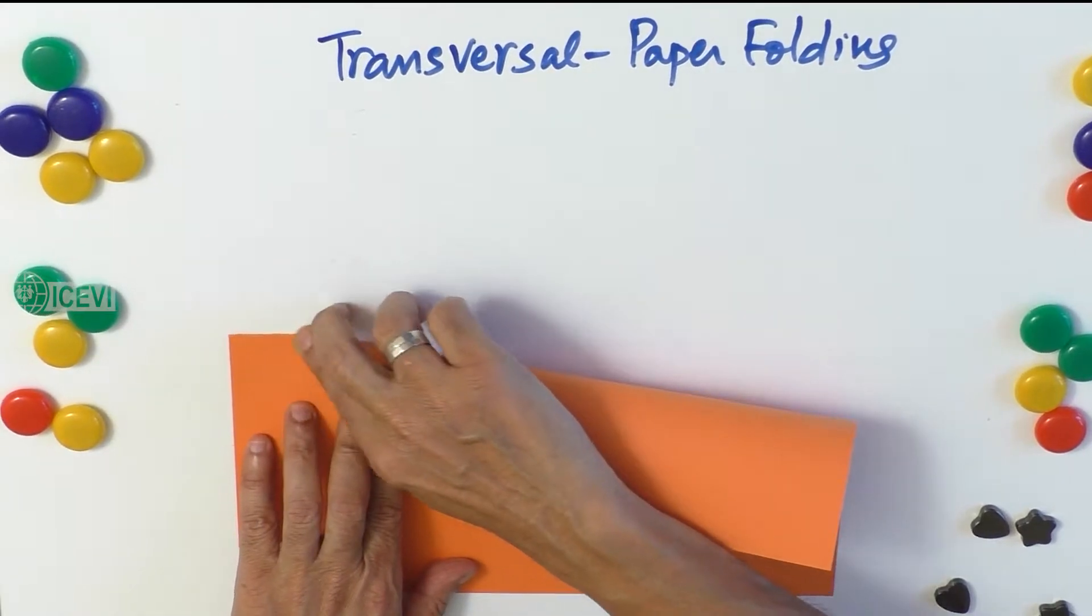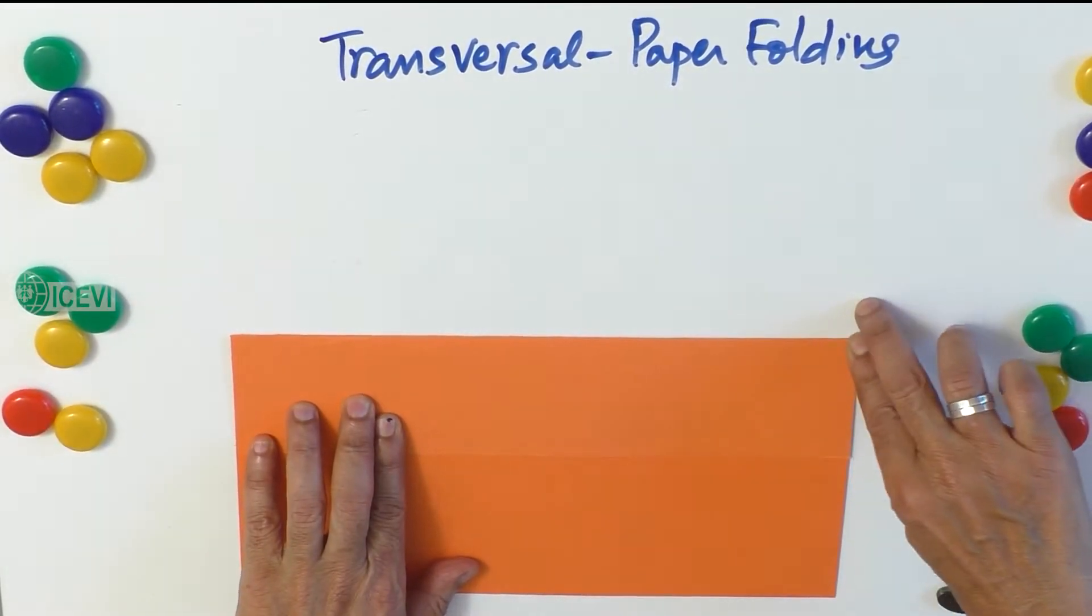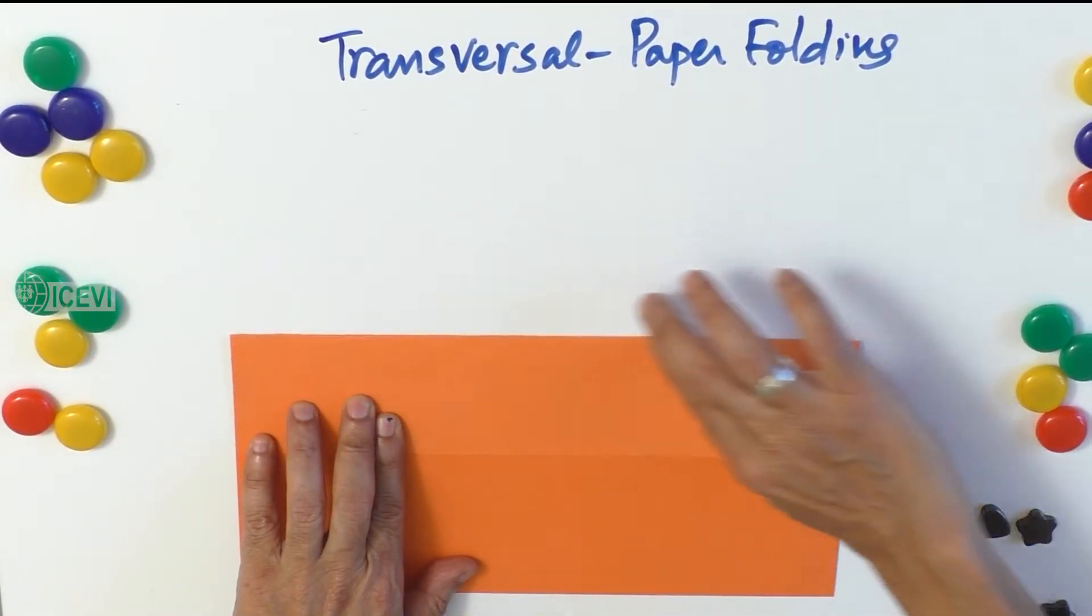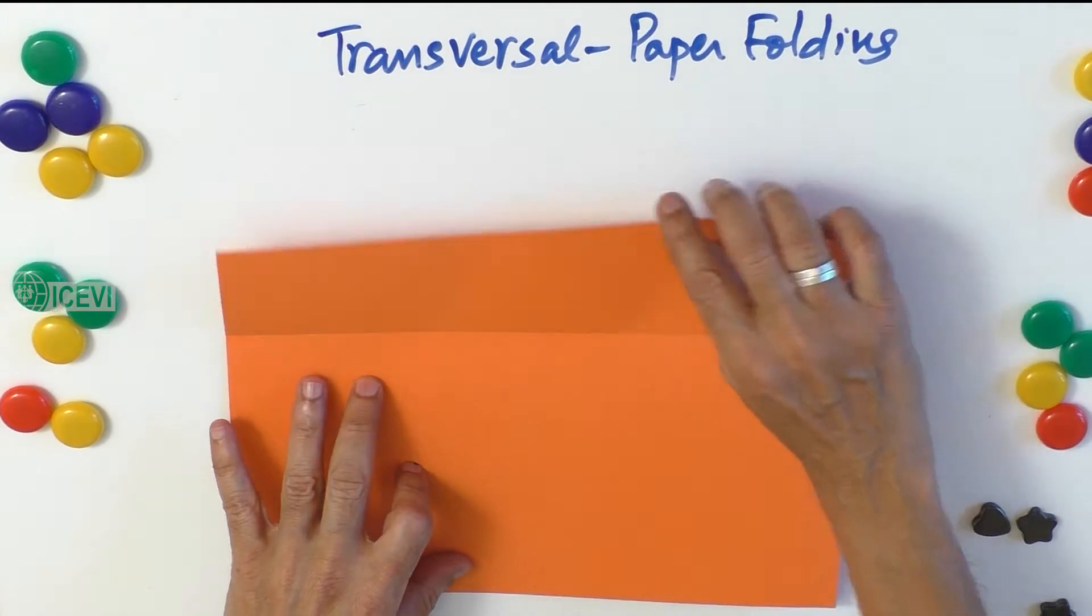Horizontally, bringing the top side of the paper towards the lower side and make a strong crease. Now this has become a straight line.